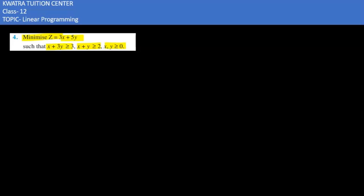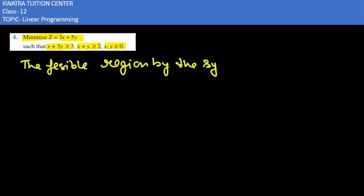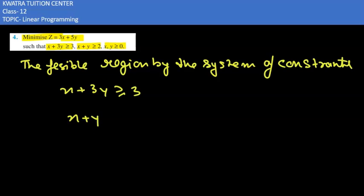First we will find the feasible region by the system of constraints which are given. Our first constraint is x plus 3y is greater than or equal to 3 and second is x plus y greater than or equal to 2.